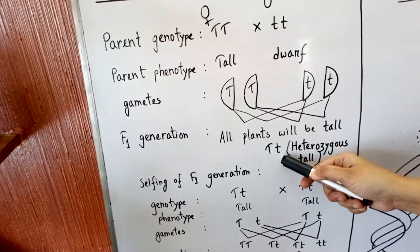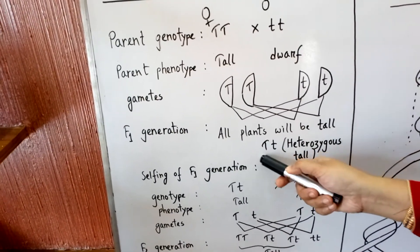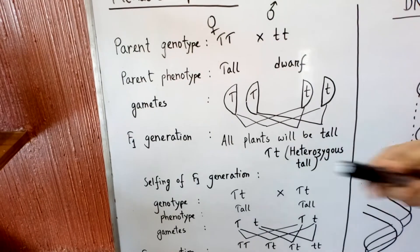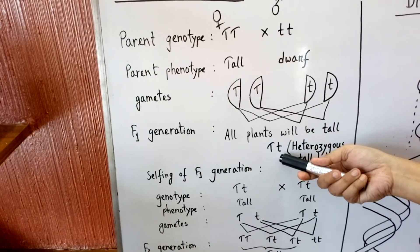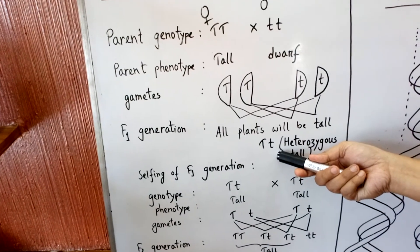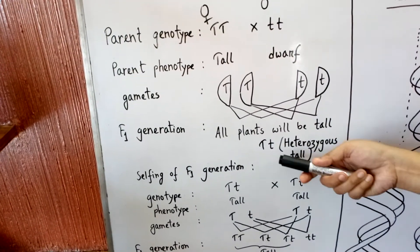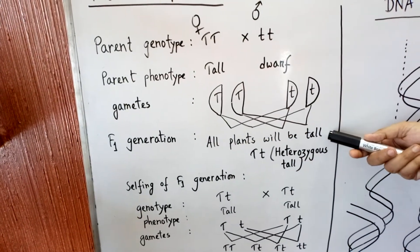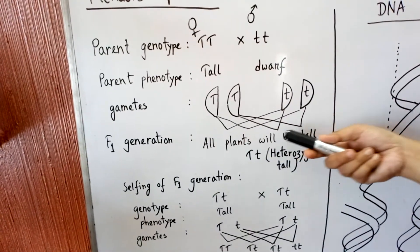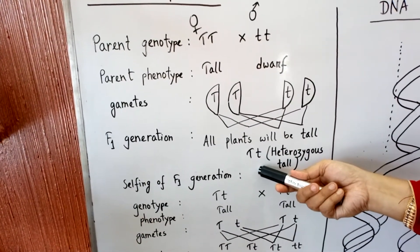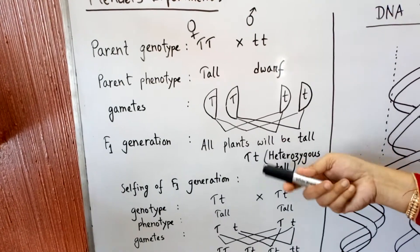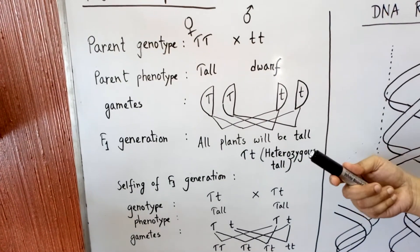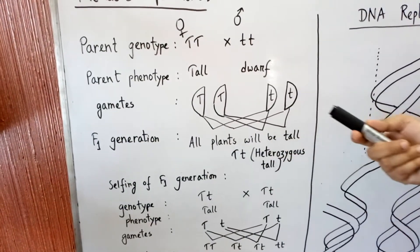Capital T is the dominant gene and small t is the recessive gene. Dominant gene means it dominates to express the characteristics of the recessive gene in the first generation. Recessive gene cannot express its characteristics in the first generation, but later on it expresses its characteristics when it is in homozygous condition. So all the plants we get in the first generation are tall plants, but they are heterozygous tall. Heterozygous means the characteristic-controlling genes are of different types.